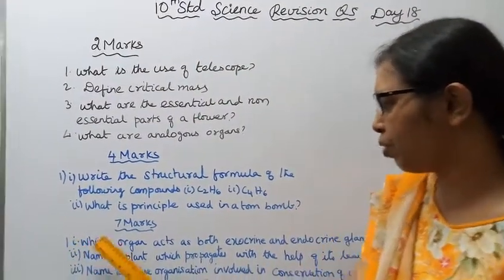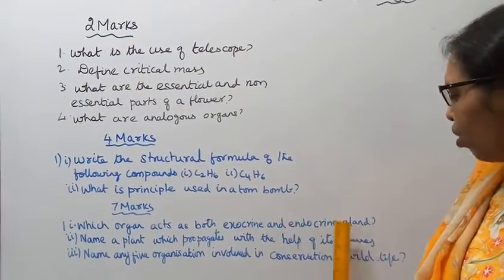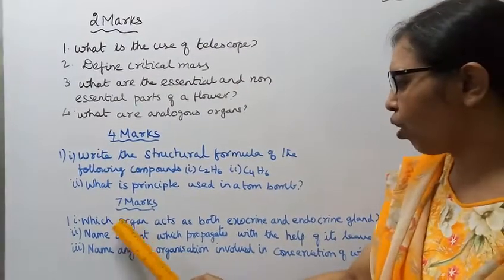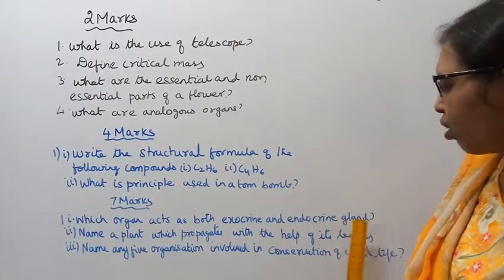Seven marks. First subdivision: Which organ acts as both exocrine and endocrine gland? Which organ acts as both exocrine and endocrine glands?